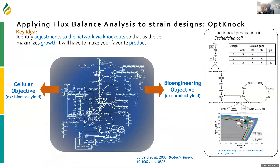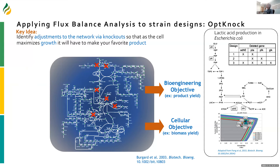One thing you can do is computationally blackmail your organism so that it has to make your favorite product — whatever that product may be — if it wants to grow. The way you accomplish this is by dismantling part of its metabolism, so it will have to rely on the production of your favorite product if it wants to make every single component of biomass. That was the genesis of OPNOC. When you do that, you end up with an inherently stable design: as you increase its fitness, as you increase its growth rate, it also makes more and more of your product.